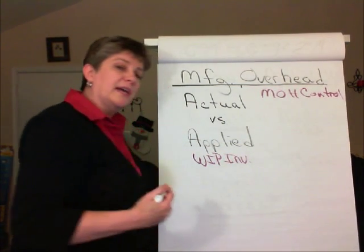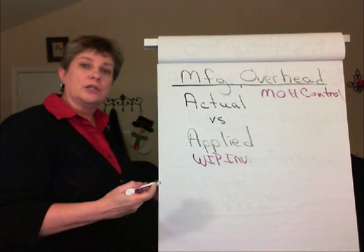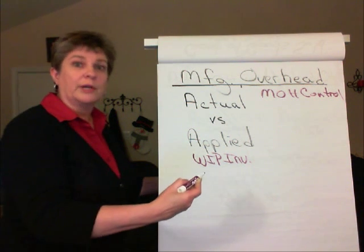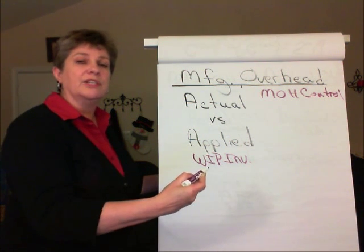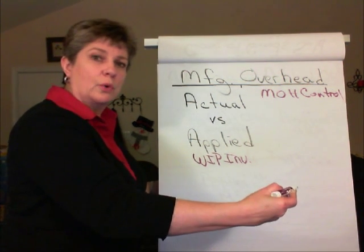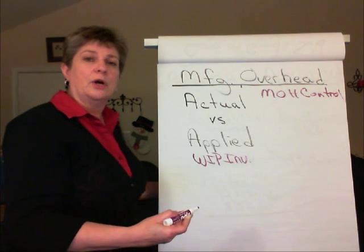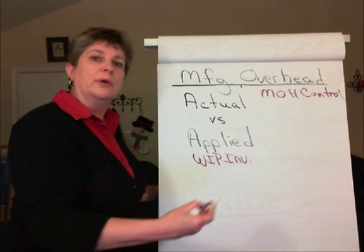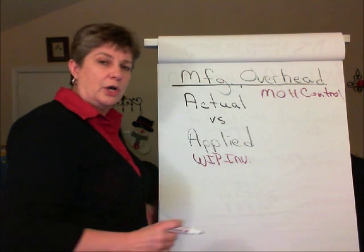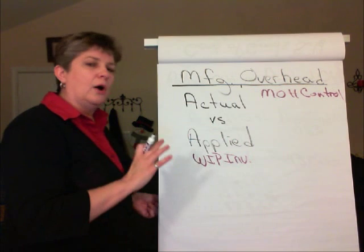As the product is completed, costs flow out of work in process inventory into finished goods inventory, and when the product is sold, the costs flow into cost of goods sold expense.